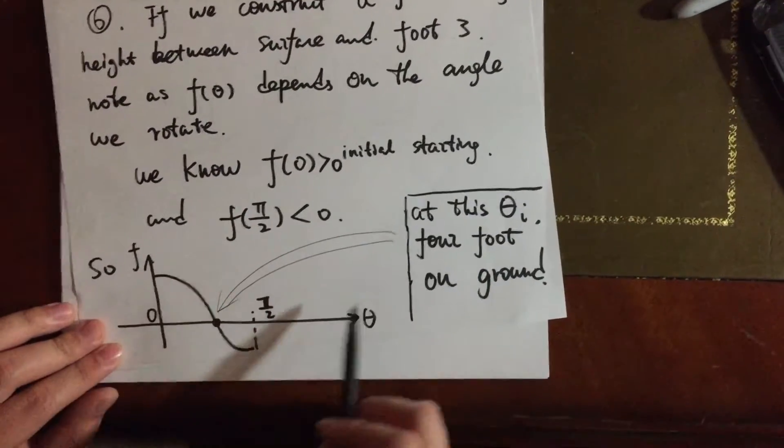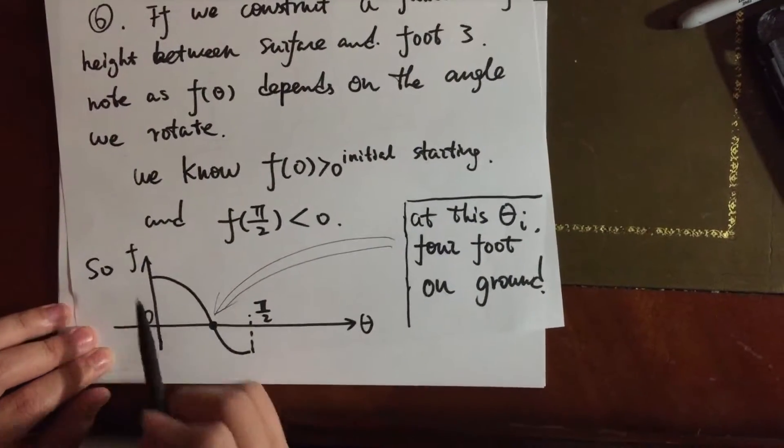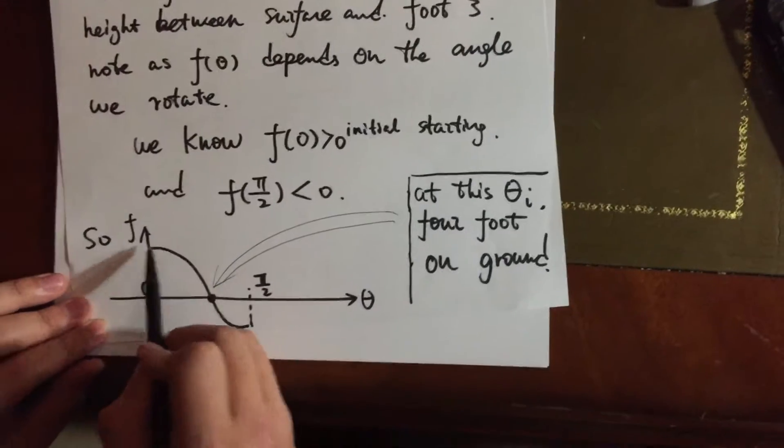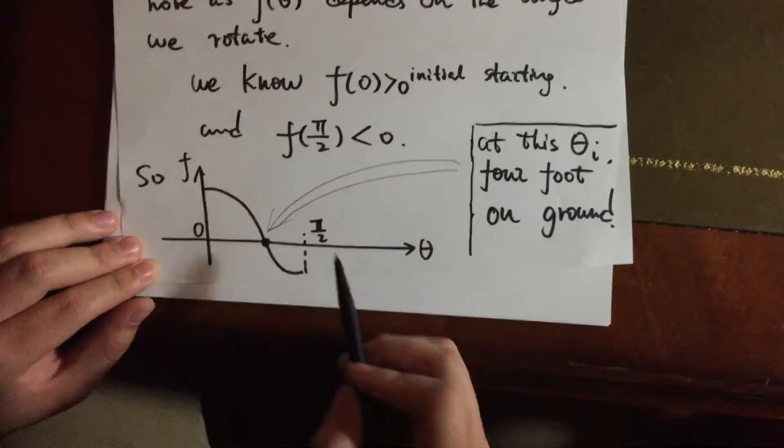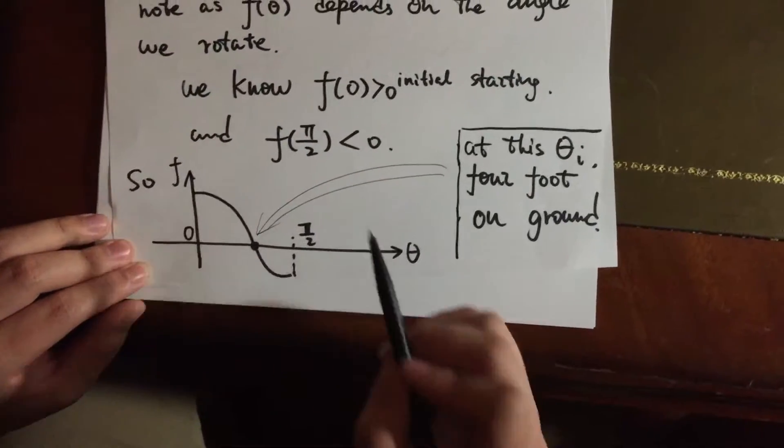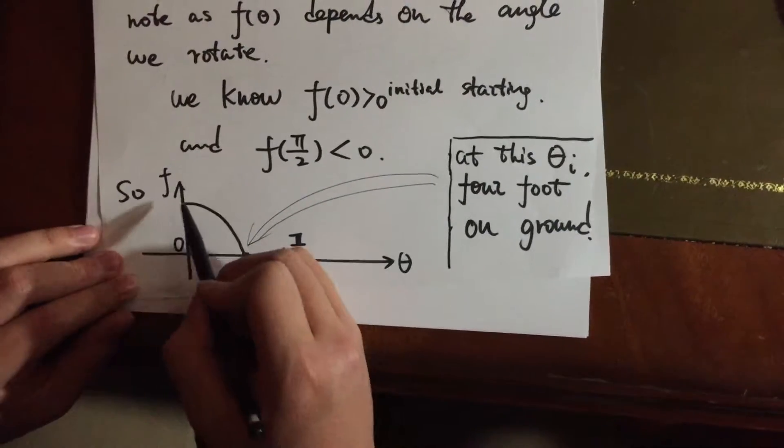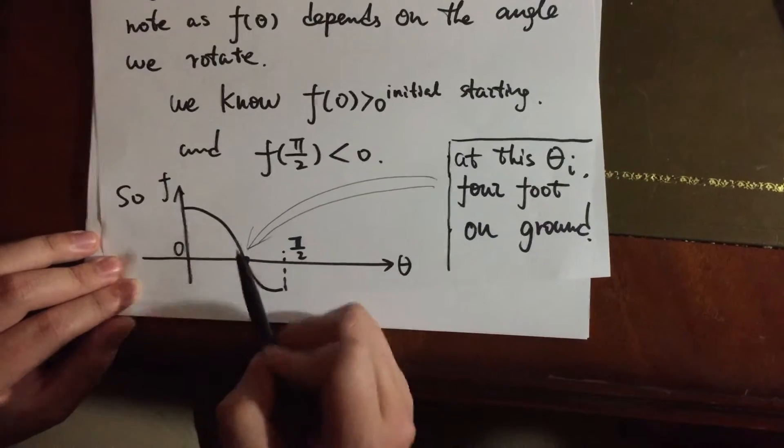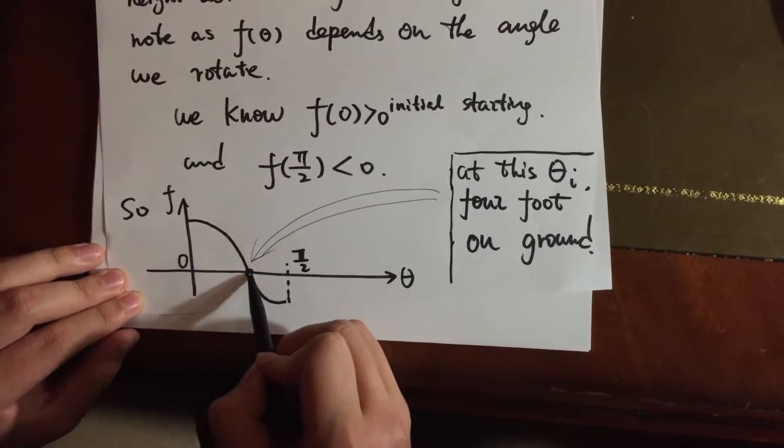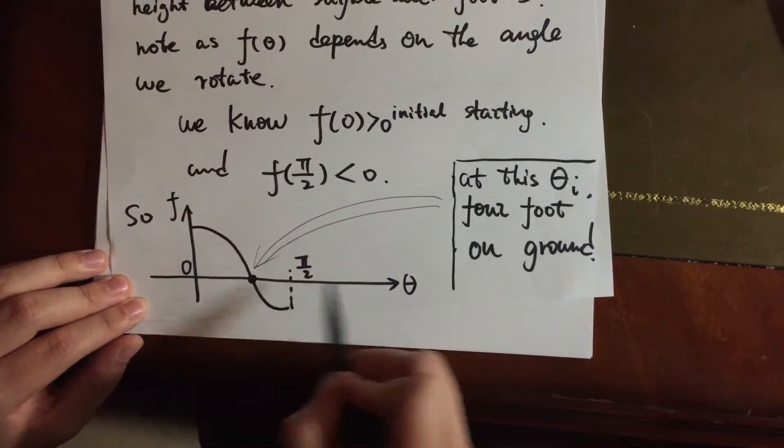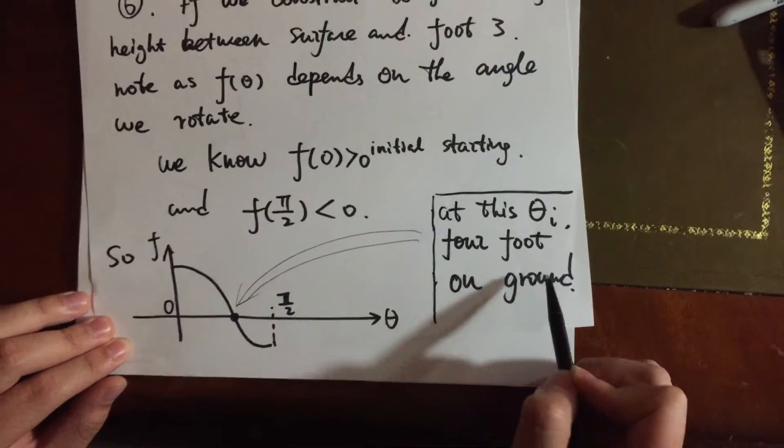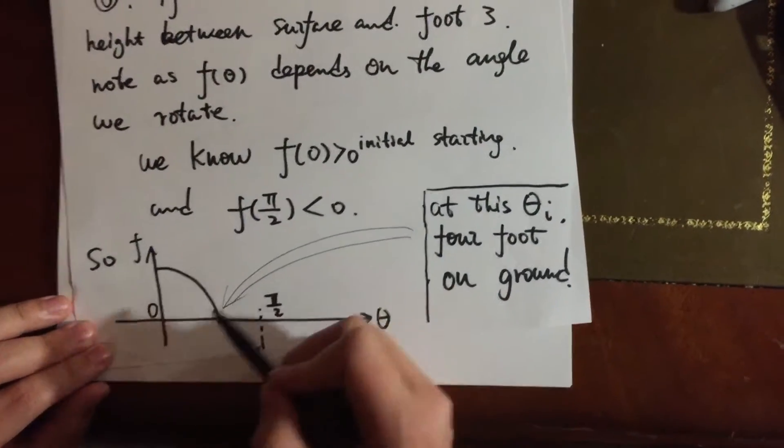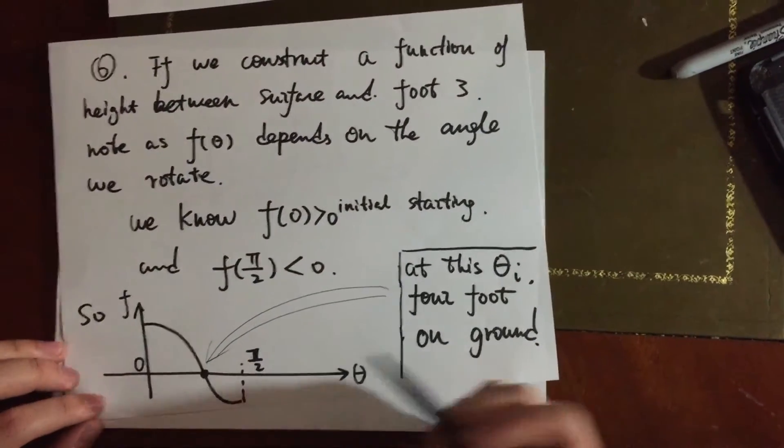So we construct a graph of the function, and now we see if a continuous function has a value switching from positive to negative, then based on the intermediate value theorem, we know there has to be one point at least in the graph where it intersects with the x-axis. And at least at theta i, the four feet are on the ground, and that's how we solve the wobbly table question. Thanks for watching.